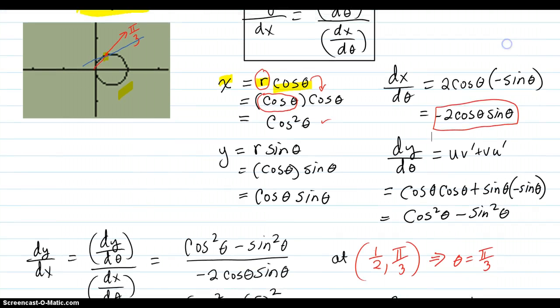Also, y is r sine theta. Again, substituting in for r the definition in this particular problem that r is cosine theta, and then it results in cosine theta sine theta. Take the derivative of that. It's a product rule. And you end up with cosine squared minus sine squared.